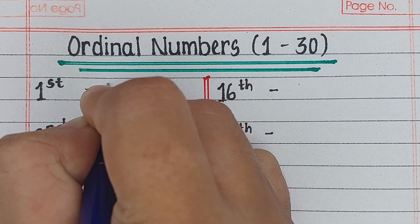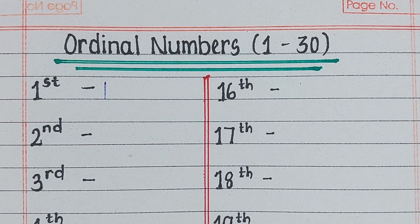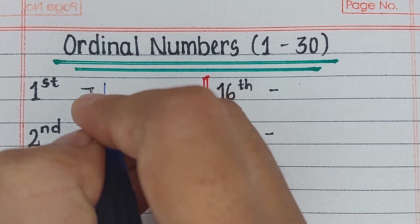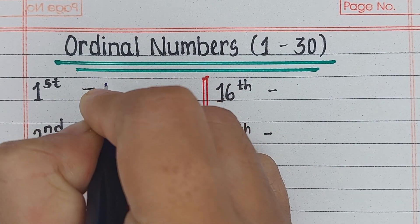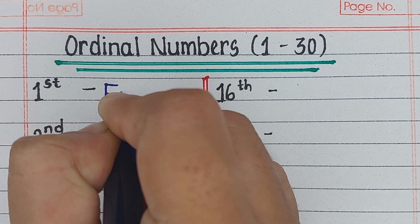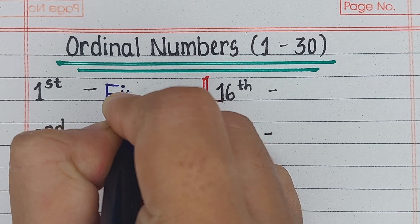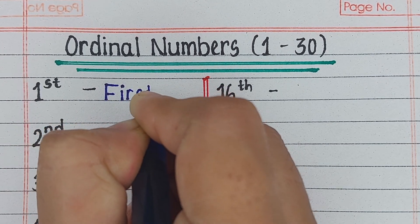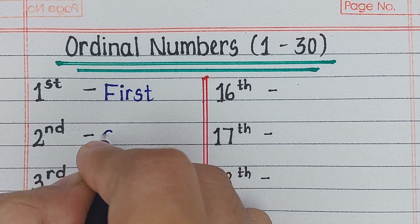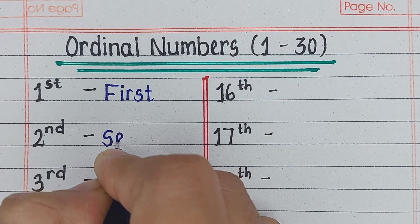Hello viewers, welcome to our YouTube channel Try to Learn. In this video we will learn the ordinal numbers from 1 to 30 along with their spellings. If you find this video helpful, please hit the like button and for more such videos consider subscribing to our channel Try to Learn.